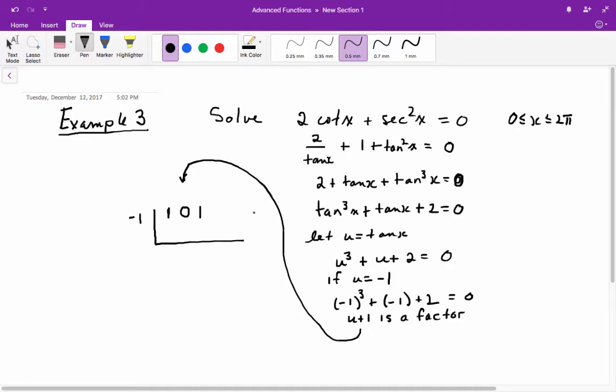And bring down the 1. Negative 1 times 1 is negative 1. 0 plus negative 1 is negative 1. Negative 1 times negative 1 is 1. Adding these, you get 2. Negative 1 times 2 is negative 2. And there's the all-important 0, which is the remainder. This means the other factor is u squared minus u plus 2.